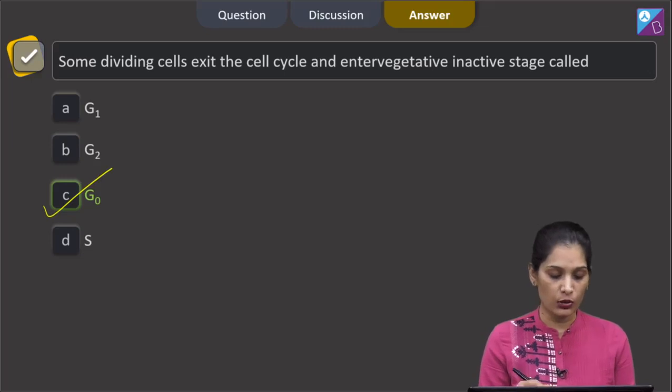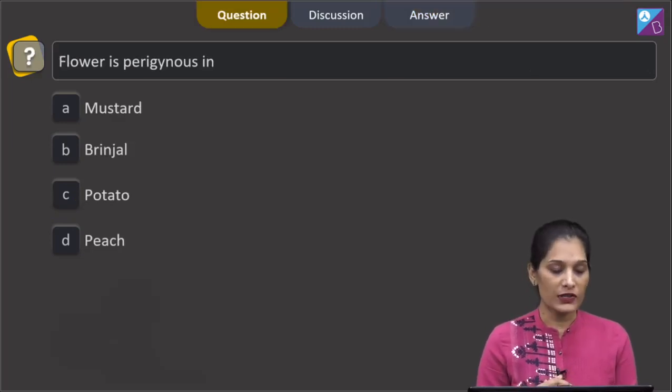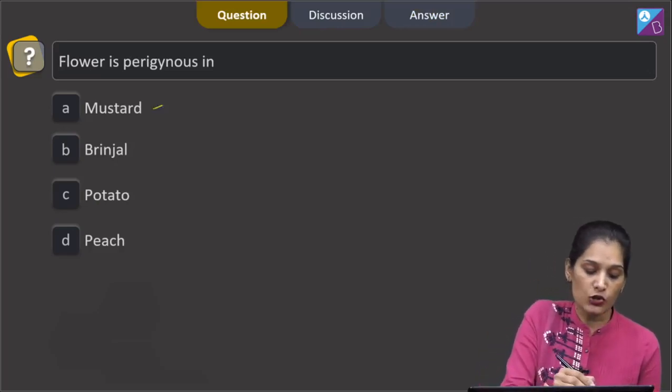Let us move to the next question. This question says is flower is perigynous in mustard has superior ovary.